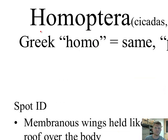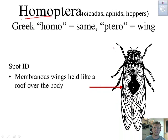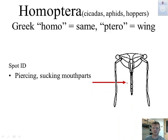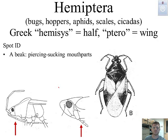Next is Homoptera. 'Homo' refers to same — same wing. These membranous wings are held over the roof of the body. Cicadas, aphids, and leafhoppers are all examples of Homoptera. We can also see a piercing-sucking mouth part, which is another indication of this order.